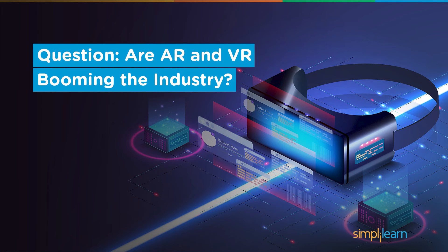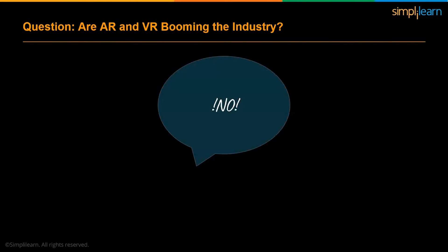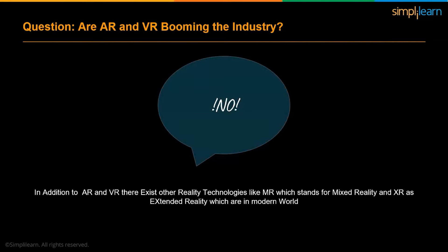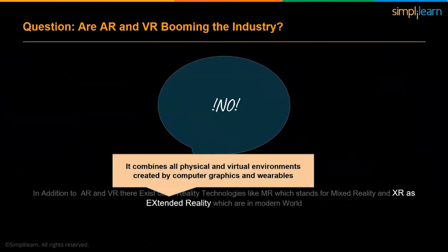So far we have discussed AR and VR technology, but are AR and VR booming the industry alone? The answer is no. In addition to AR and VR, there exist other reality technologies like MR, which stands for Mixed Reality, and XR, known as Extended Reality. Mixed Reality takes user experiences to the next level with a combination of holographic models and real-world scenarios. Extended Reality is the combination of all reality technologies including AR, VR, and MR — for example, a mobile chipset used to both track your health and power graphics for gaming.